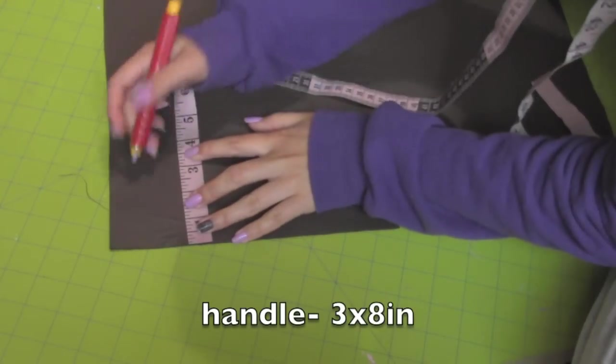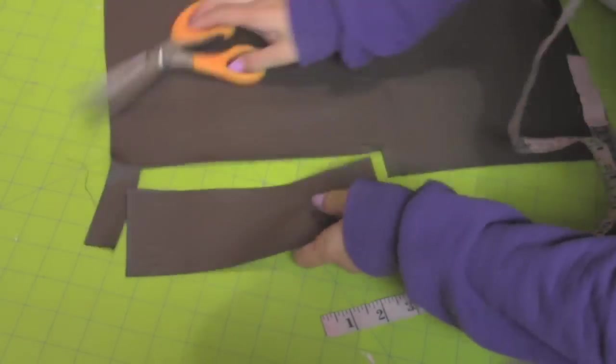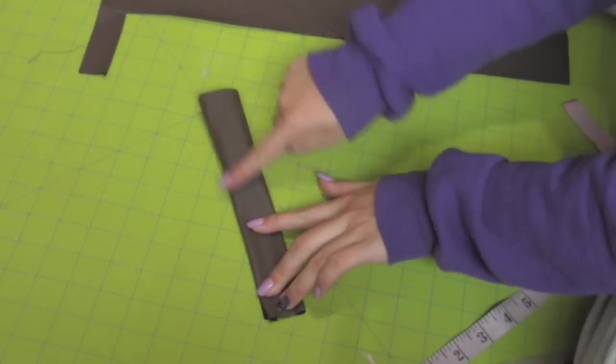Take some vinyl and cut a 3 by 8 strip. Fold it in half wrong sides together and sew a seam on both sides. This will be the handle to the backpack.